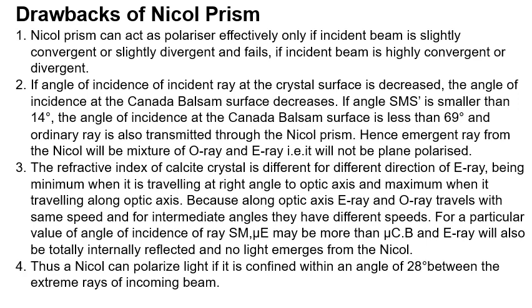The third drawback: the refractive index of the calcite crystal is different for different directions of the E ray — minimum when traveling at right angles to the optic axis and maximum when traveling along the optic axis. Along the optic axis, E ray and O ray travel with the same speed, and for intermediate angles they have different speeds. For a particular angle of incidence, the refractive index of the extraordinary ray may exceed that of Canada balsam, causing the extraordinary ray to also be totally internally reflected and no light emerges. Thus, a Nicol prism can polarize light only if it is confined within an angle of 28 degrees between the extreme rays of the incoming beam.